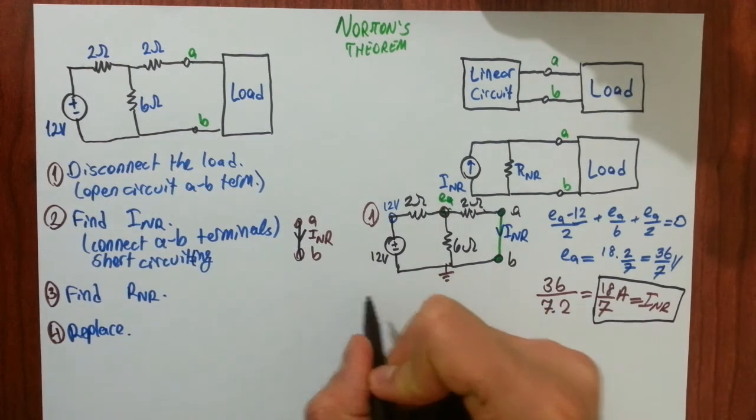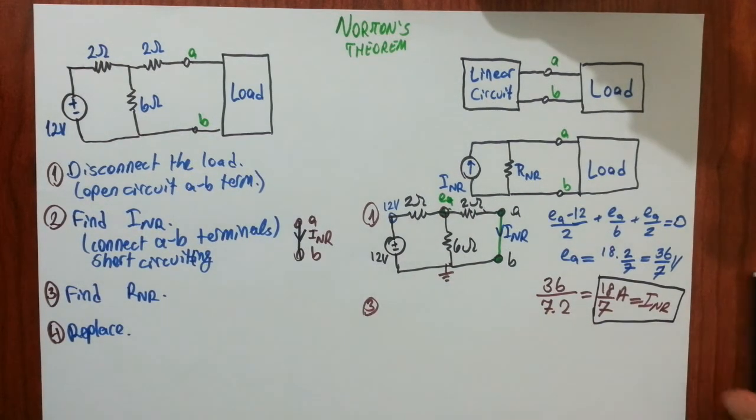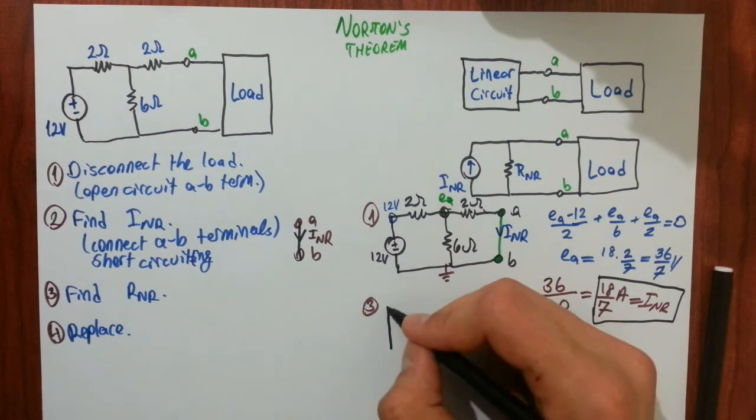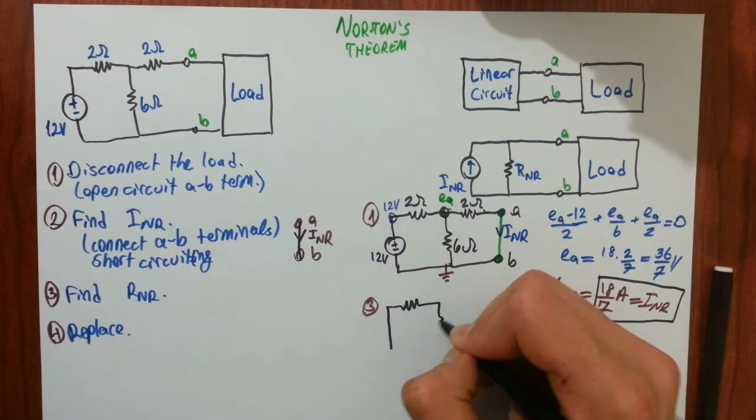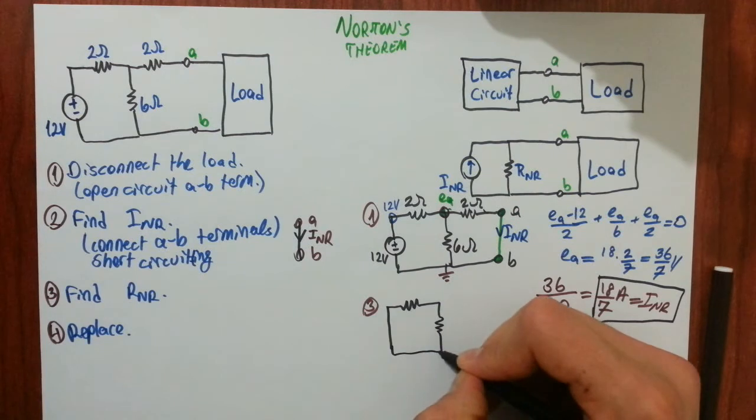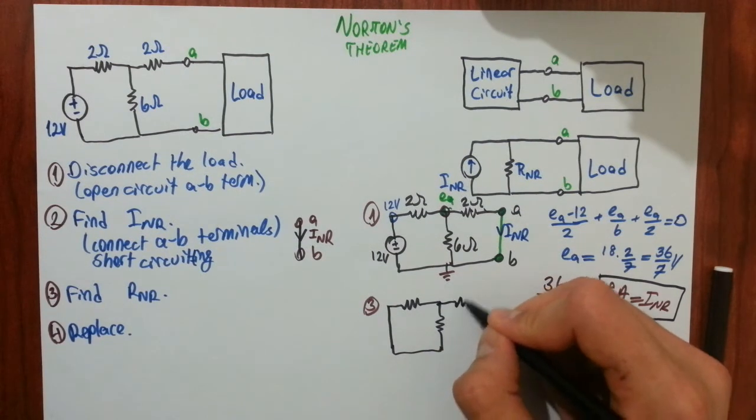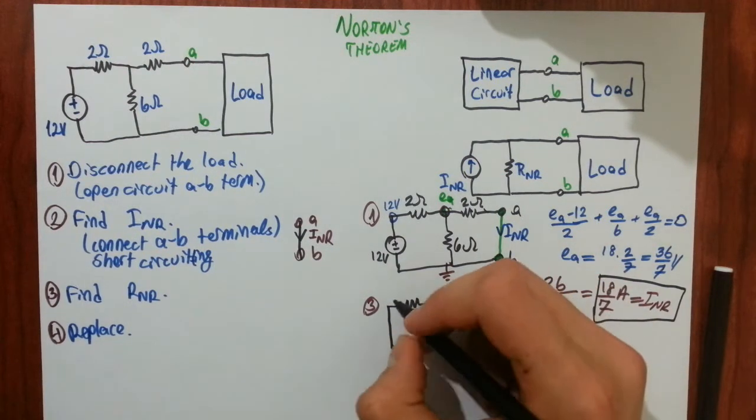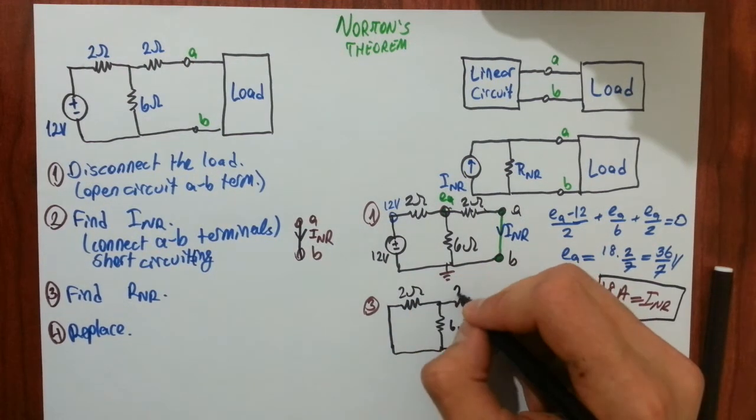I will write down here. Third step is to find Norton equivalent resistance. I will kill all independent sources. And actually there is one independent source. So that's not very hard. Here is the re-drawing of the circuit. Here we have two on two on.